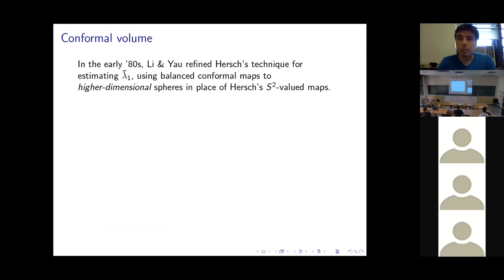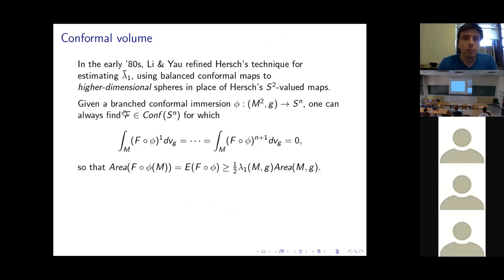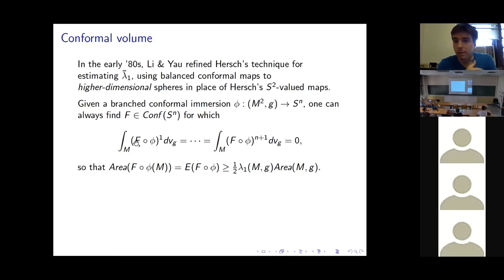Shortly after Yang-Yao, Li and Yau refined Hersch's technique by using balanced conformal maps into higher-dimensional spheres — introducing conformal volume. The key idea: starting from any branched conformal map from our surface into some sphere Sⁿ, one can always find a conformal automorphism of that target sphere such that all component functions of the composition are balanced with respect to our given metric. Summing the Rayleigh quotients as before, the area of the image — which by conformality equals the energy — is bounded below by half the area-normalized first eigenvalue.